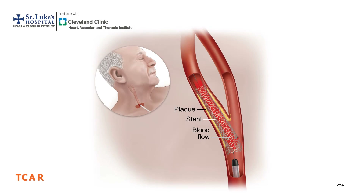Having established flow reversal, a wire is used across the lesion, and a stent is deployed, opening the vessel up. Any debris that might break loose with deployment of the stent doesn't travel north up to the brain, but because of the flow reversal, it's sucked through the sheath, filtered, and enters back into the femoral vein.